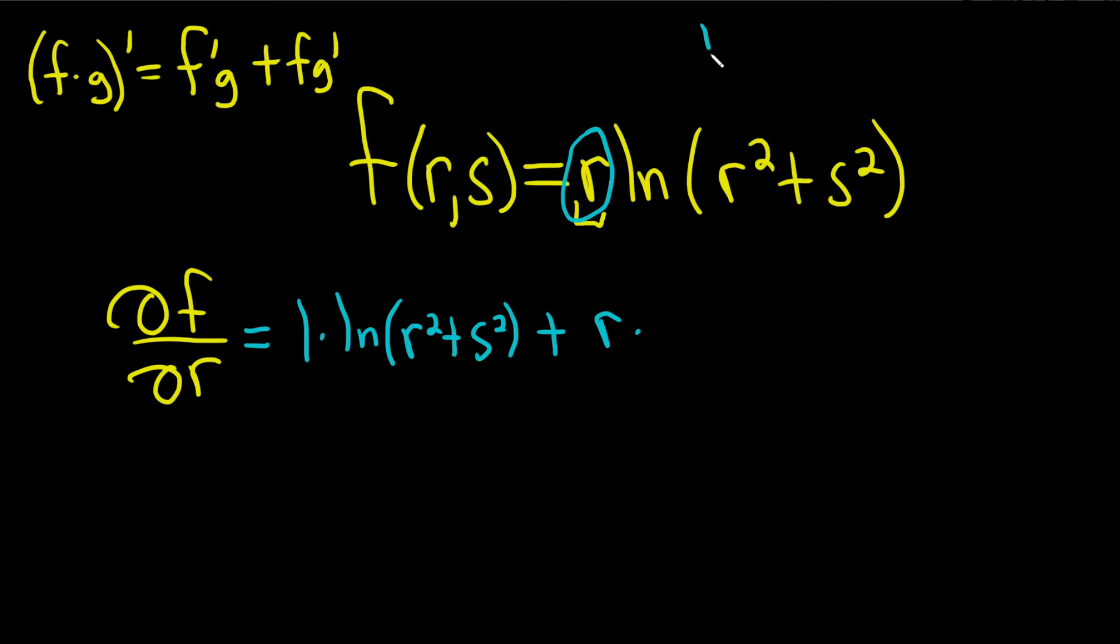Now, if it was ln x and you took the derivative, you would get 1 over x. So here it's 1 over whatever is here, so 1 over r squared plus s squared, and then times the derivative of the inside, that's the chain rule. So when we're taking the partial with respect to r, all of the other variables are constants, so the derivative of s squared will be 0. So here we just get 2r.